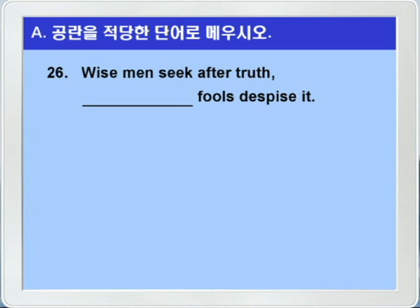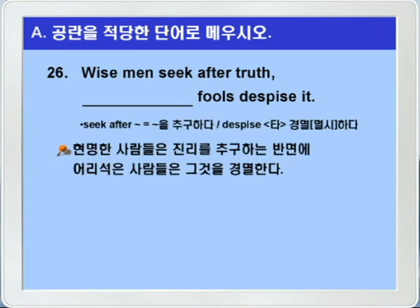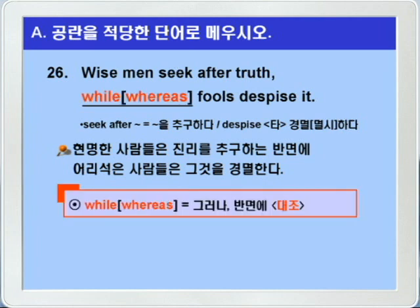26번입니다. seek after는 뭐뭐를 추구하다, despise는 타동사로 경멸하다, 멸시하다, 이런 뜻이니까. 따라서 blank에는 반면에 이런 뜻을 가지는 접속사를 쓰면 되겠습니다. 반면에 이런 뜻을 가진 접속사로 while이 있죠? 그리고 whereas라는 말도 있습니다. while이나 whereas 앞에 콤마가 있으면, 그때 while이나 whereas는 반면에, 이런 뜻으로 대조를 나타냅니다.